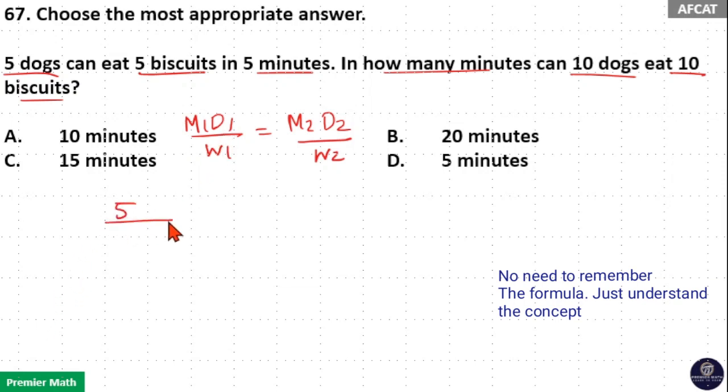So, here 5 dogs can eat 5 biscuits. Here, 5 biscuits is the work rate in 5 minutes.